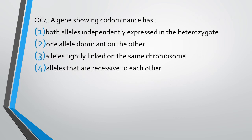Question number 64: A gene showing codominance has — both alleles independently expressed in heterozygote, one allele dominant over the other, alleles tightly linked on the same chromosome, or alleles that are recessive to each other. The correct answer is option 1 — both alleles are independently expressed in the heterozygote.